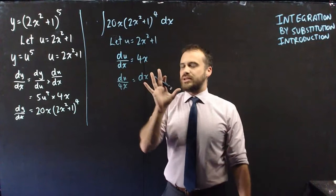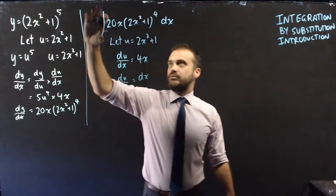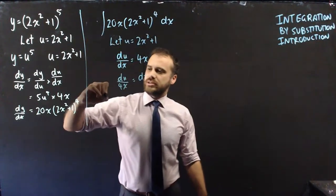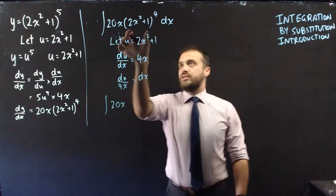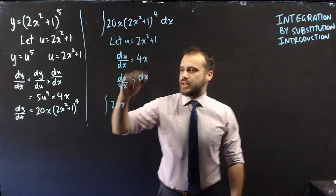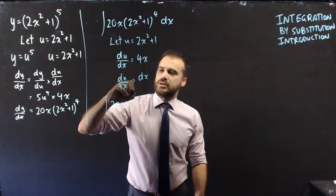It allows us to do something really cool. We can rewrite this original in a slightly different way. That 20x, I'm going to keep it how it is. Now this 2x² + 1, let's make that u now. So that's u^4.